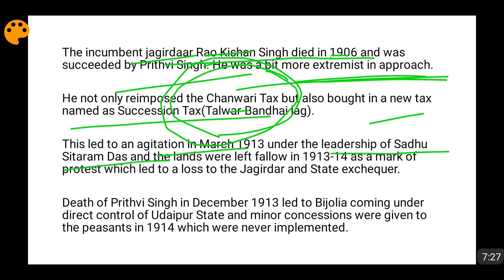As a mark of protest, these peasants in 1913–14 left the land fallow — they did not cultivate the land. With no crop, no harvest, and nothing sold in the market, the Jagirdar received no revenue and the state's income suffered.